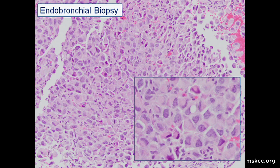So what is your differential diagnosis based on the histology? Metastatic breast carcinoma was definitely in my differential diagnosis. What else could it be?